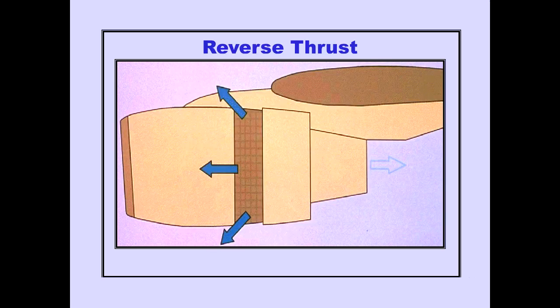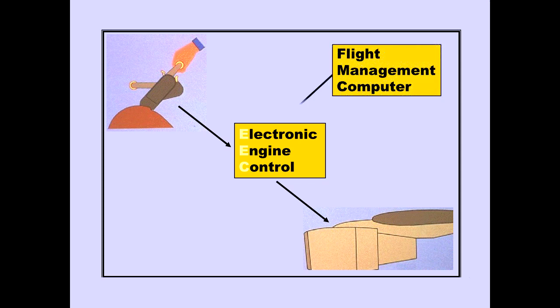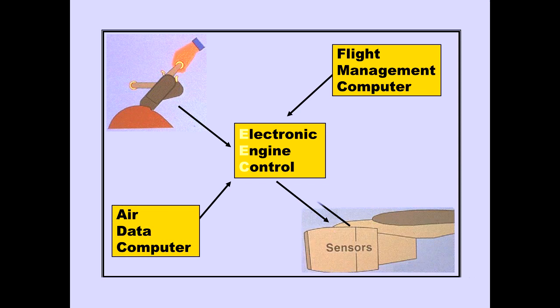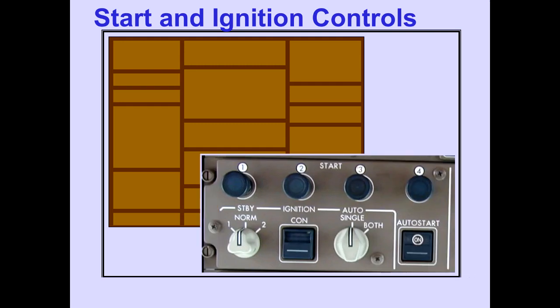Reverse thrust is accomplished by fixed cascade fan reversers. Thrust is managed by an electronic engine control, or EEC. Thrust lever position is transmitted to the EEC electronically with no mechanical interconnection. The EEC also receives inputs from the flight management computer, the air data computer, and engine sensors. Control switches for the EECs are located on the overhead panel. Start and ignition controls are also located on the overhead panel.